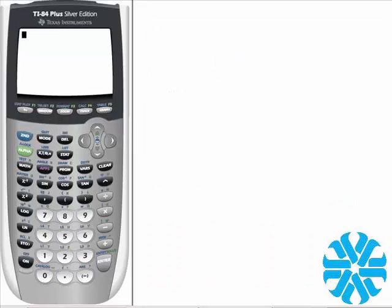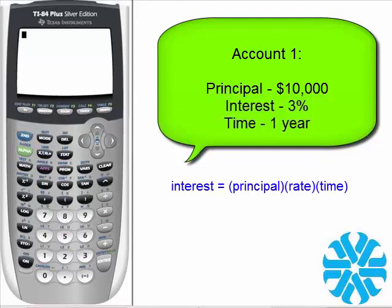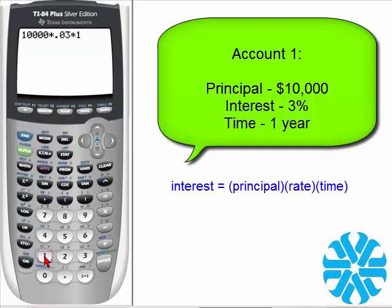The amount in your first account is $10,000 earning a 3% return for one year. The simple interest formula is: interest equals principal multiplied by the interest rate multiplied by the time of the investment. So let's compute the amount of interest for the first account: $10,000 multiplied by 3% multiplied by one year. We want to store that answer into a specific part of the calculator's memory.